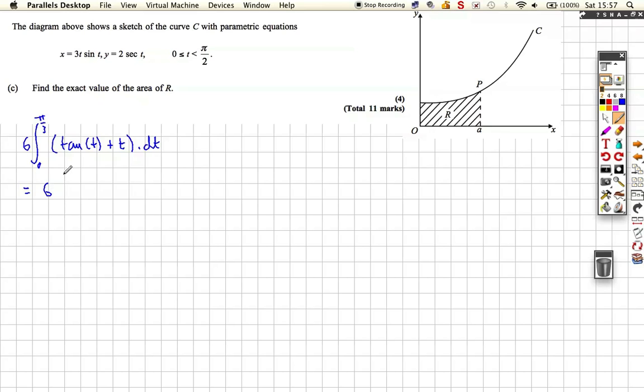Well that becomes 6 on the outside. Well tan T integrates to ln sec T, and T integrates to T squared over 2. And we're doing that between 0 and pi over 3. So let's carry on, 6 outside, and then we're going to get, well we need to put pi over 3 in all of these things. We'll do that on a calculator. Sec of pi over 3 is 2, so actually we get ln 2, plus, putting this into here, we get pi squared over 9, but it's half of that, so it's pi squared over 18.